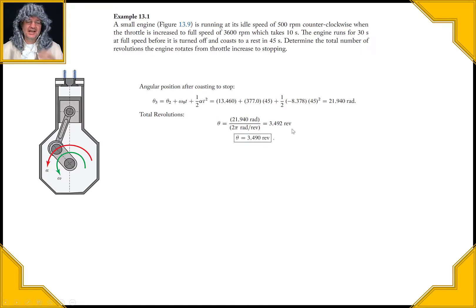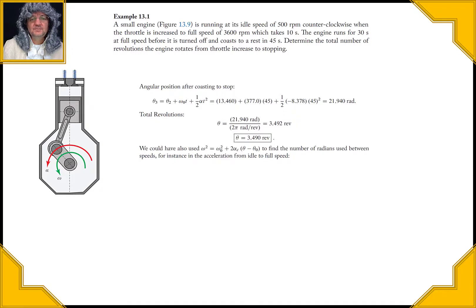Right, so it's 3,492 revolutions have taken place. So that's kind of the idea behind applying the angular version of these kinematic equations, especially when it's in the constant realm, but we've got to be careful to only use the constant version of the equations when they're applicable. So we could also have used this, so that's something interesting to note.